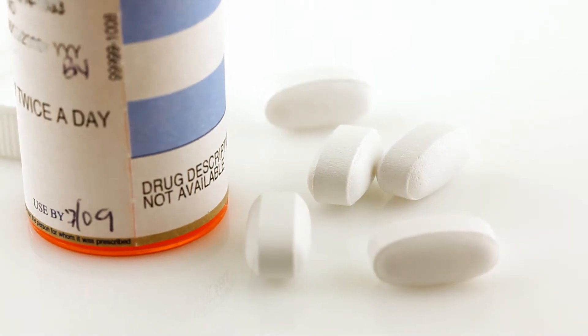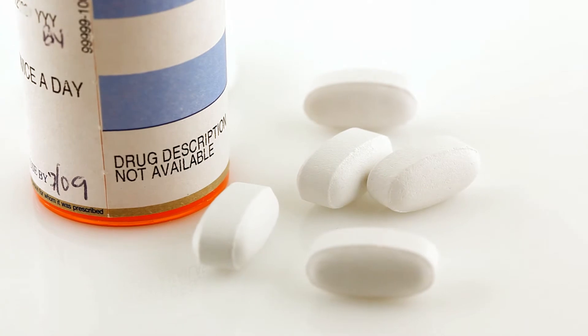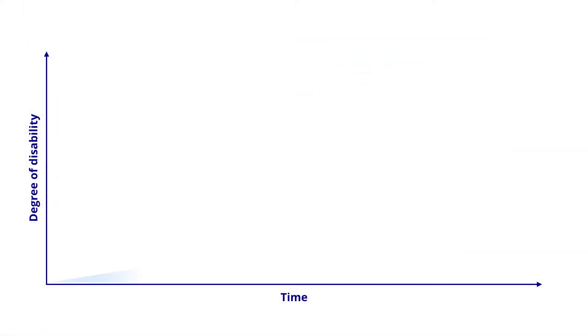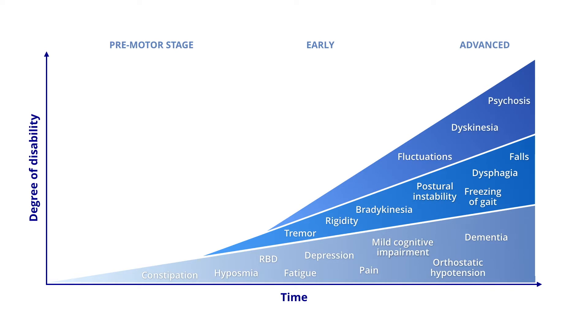There are currently treatments that alleviate symptoms in many people with Parkinson's. Unfortunately, they don't stop disease progression. The dopamine-producing neurons continue to die and eventually all treatments lose their efficacy.